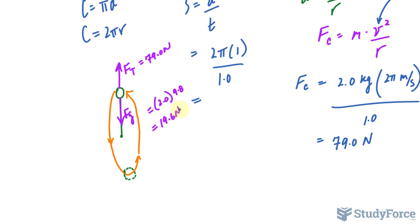Now since they're going in the opposite direction, these two forces, then we have to subtract them. So at the top, the force at the top is equal to 79.0 newtons minus 19.6 newtons. And that amounts to 59.4 newtons.